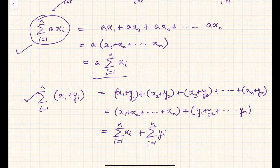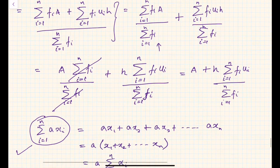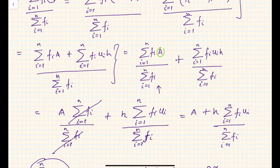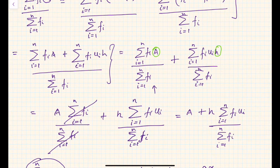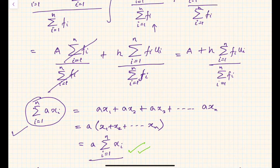These two summation rules were used in the derivation above: the rule for splitting a sum of two terms into two separate summations, and the rule for pulling a constant out of a summation. Hope you understood the step deviation method. Thank you.